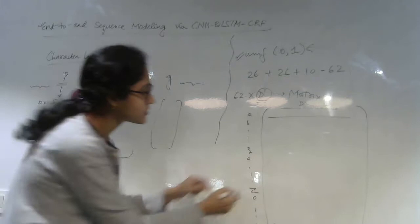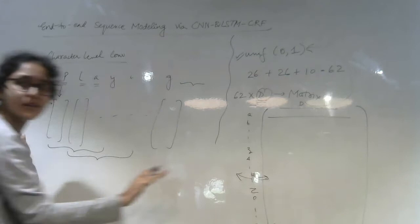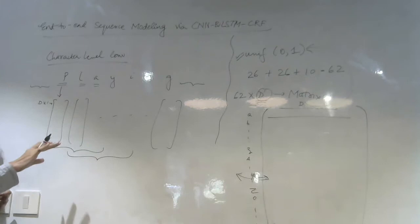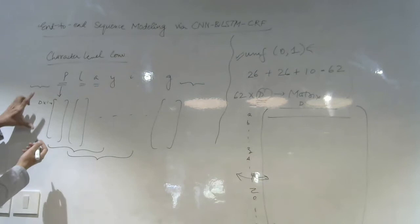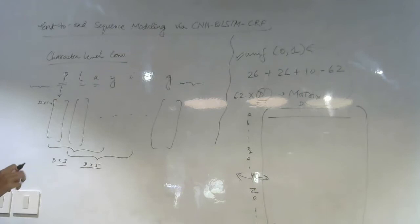D is any number, basically the dimension of the character embedding that you choose. It's just like a parameter. For every word it's the same. Every word will be embedded in that dimension. So you have A to Z, a to z, 0 to 9, and for each of that you have a D sized vector. That's what I wanted to say with the 62 cross D.